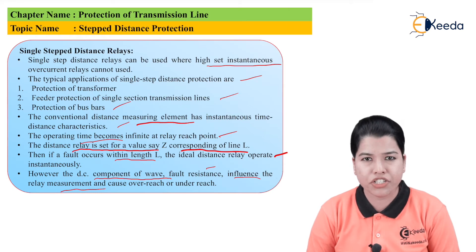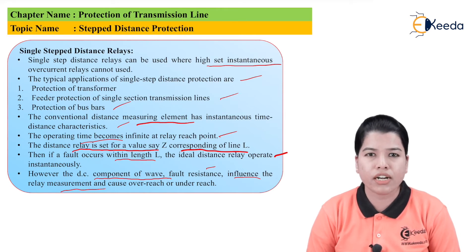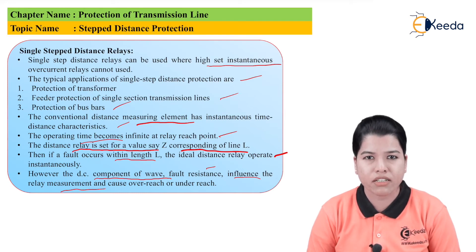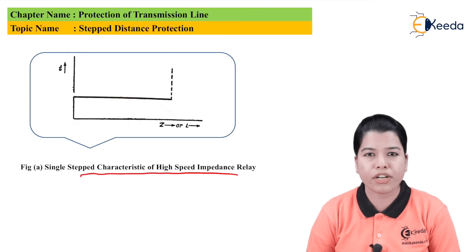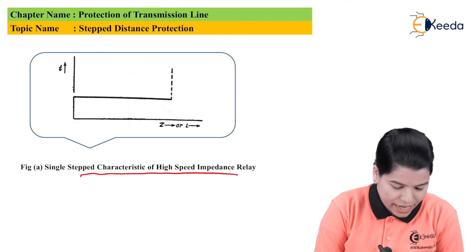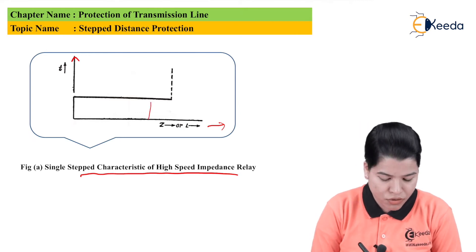In the case of overreach, the relay operates even when the fault has occurred outside its zone of protection, that is, outside the length L. That condition is called the overreach condition. Whereas in the underreach condition, the relay does not operate even if the fault has occurred within the length L. So practically, the relay might be inoperative or it might operate for faults outside or inside the zone. The figure shows the single step characteristic for high-speed operation of impedance relays, plotting time versus impedance or line length.